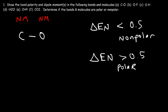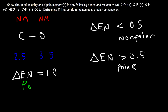Carbon has an electronegativity value of 2.5 and oxygen is 3.5. If you need access to these numbers, you can go to Google Images and type in electronegativity values from the periodic table. The electronegativity difference in this molecule is 3.5 minus 2.5, which equals 1.0. Therefore, the carbon-oxygen bond is a polar covalent bond.